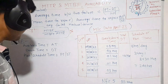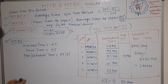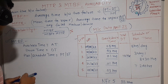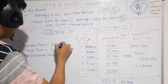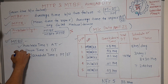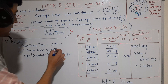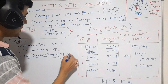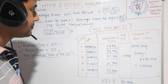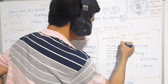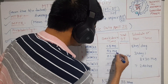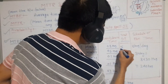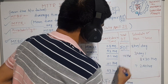Now in this MTBF case, there are three key values: Available Time (AT), Downtime (DT), and Plan or Schedule Time (PT or ST). The total downtime is 3 + 2 + 1 + 1 + 3 hours, which equals 10 hours.